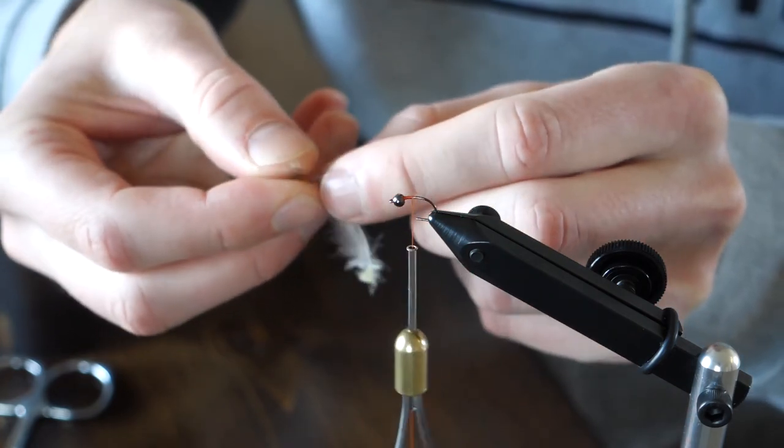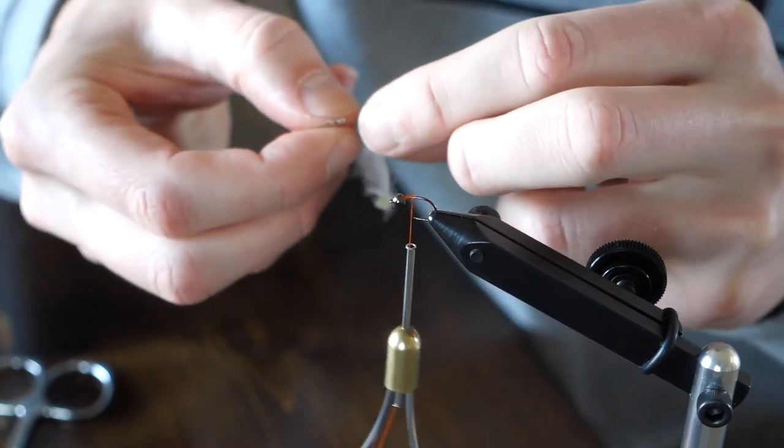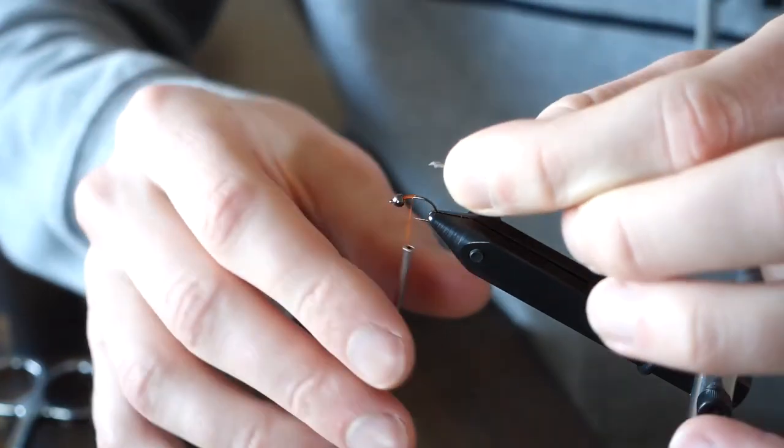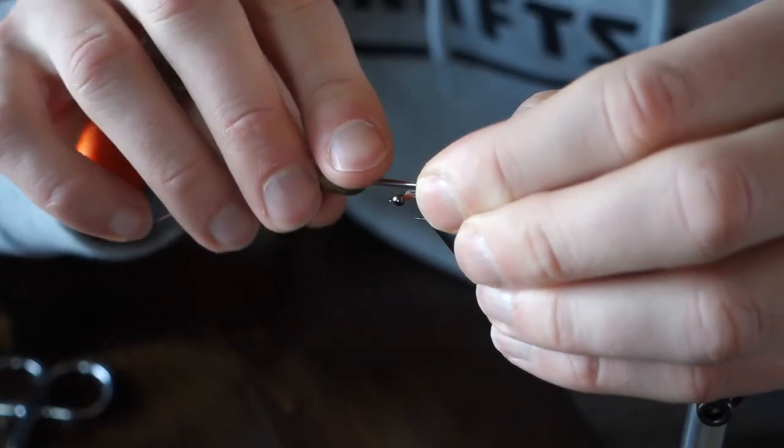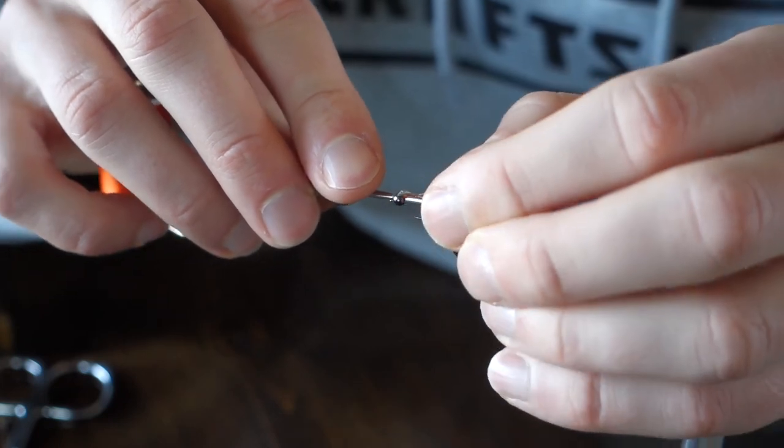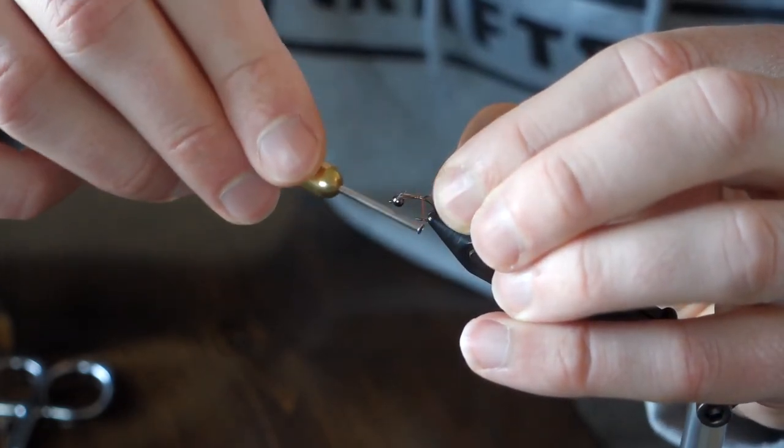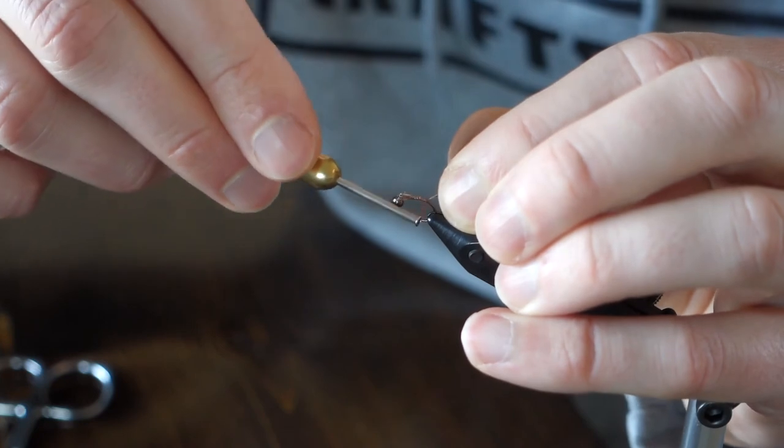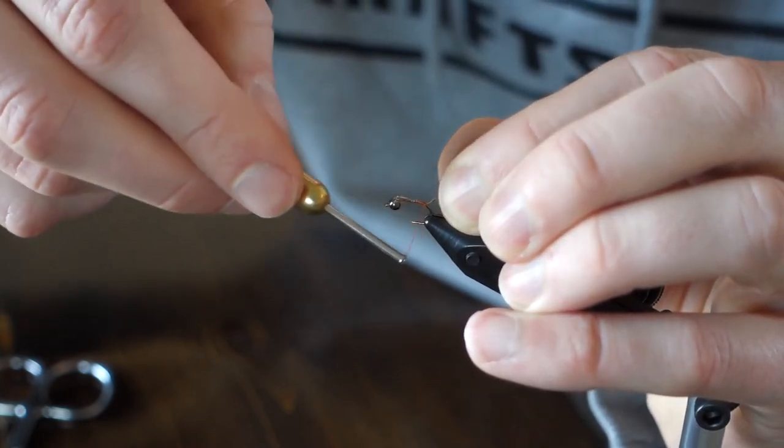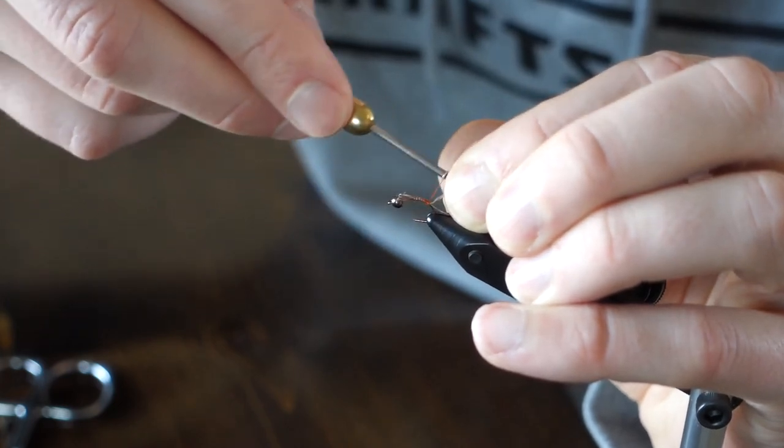Once we've made our beginning thread wraps, I'm going to pull about six to seven barbs from a soft tackle. This is a hen dun soft tackle. You could use really any hackle that you want, it doesn't need to be soft, whatever color you like. I want the length of it to be about the width of the hook gap.